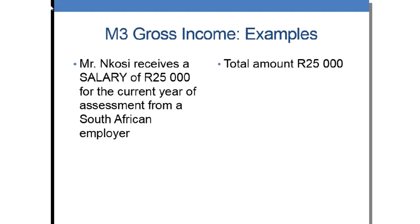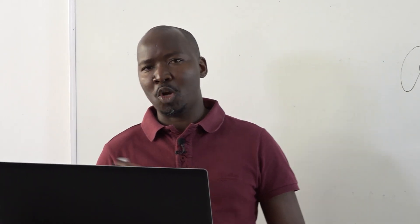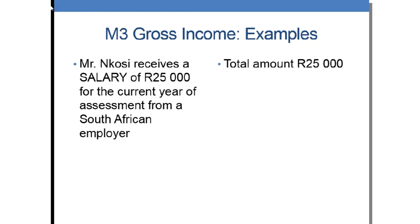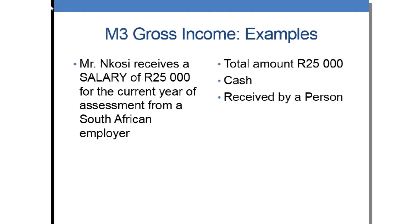Example 1: Mr. Ngozi received 25,000 rand for the current year of assessment from a South African employer. Is this amount taxable? It is a simple salary transaction — the amount will be taxable in full. The employer is a South African employer and Mr. Ngozi is a South African resident, so it is resident-based. The source of income is also South Africa. There is a total amount in cash — 25,000 rand — so it is included in gross income.